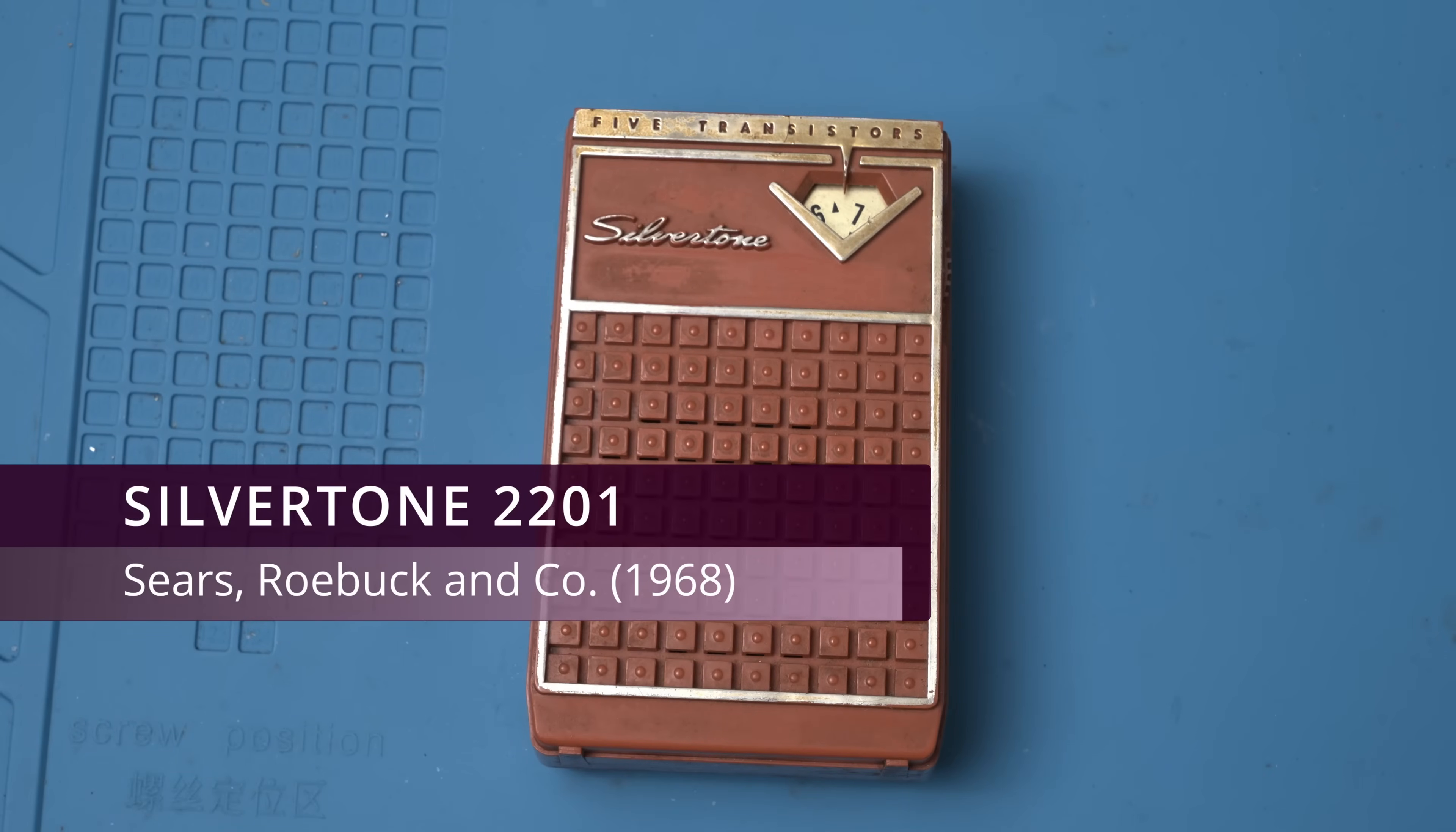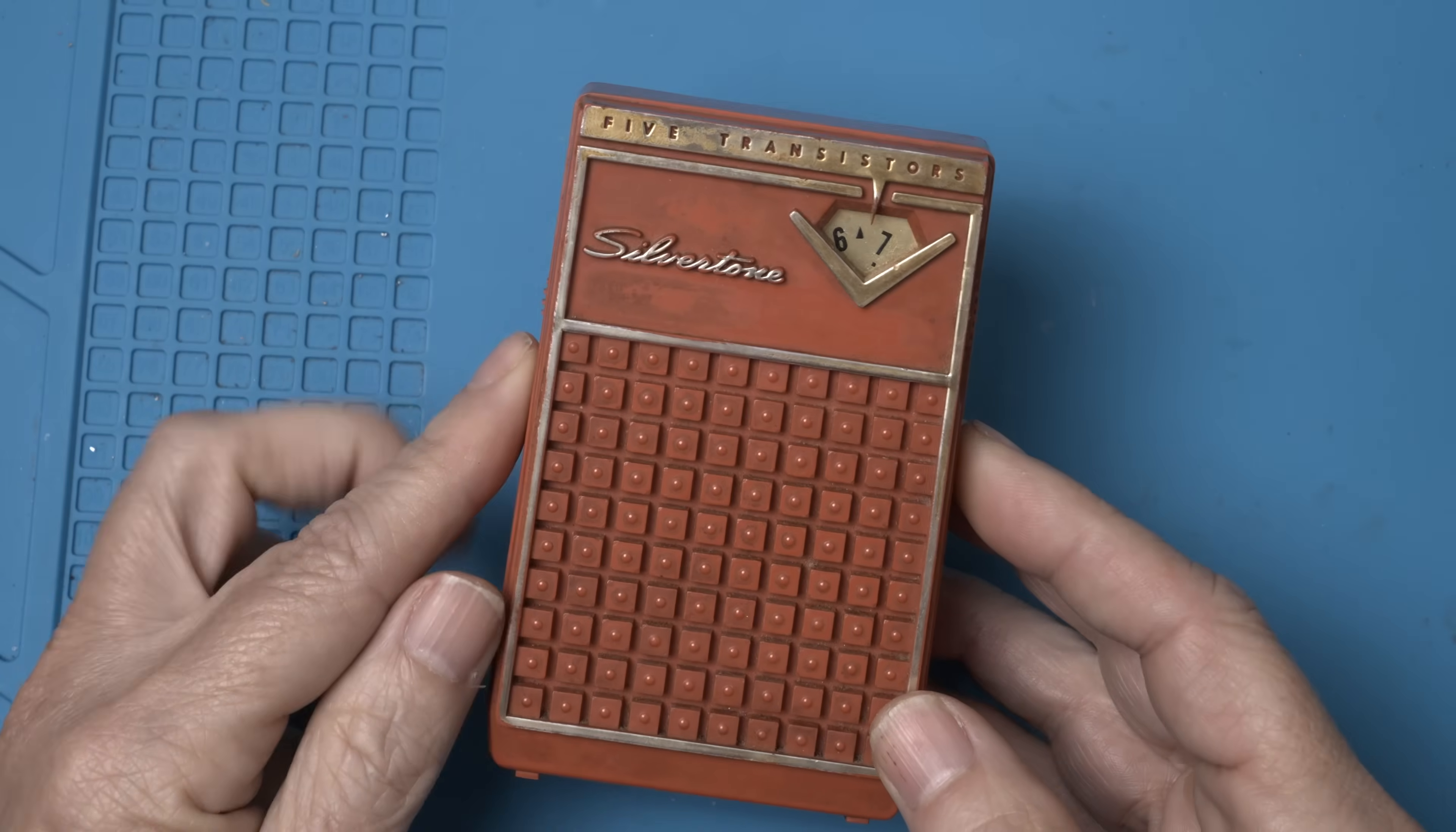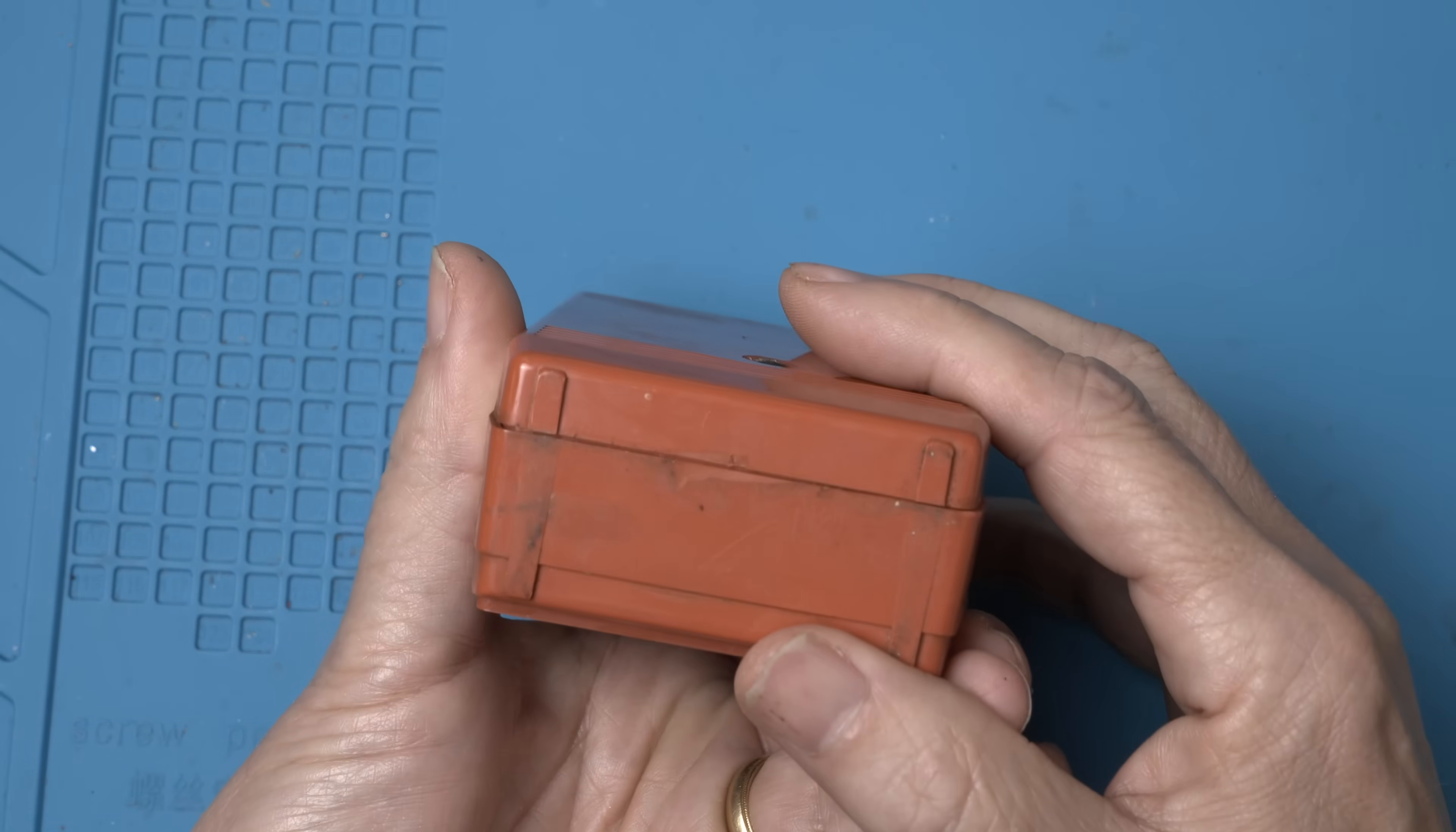Today on the workbench we have the Silvertone 2201, made in the US in 1968 by Sears Roebuck and Company. It was only described as bad stations, so let's give it some power and see what's up. Maybe we can bring another piece of history back to life.